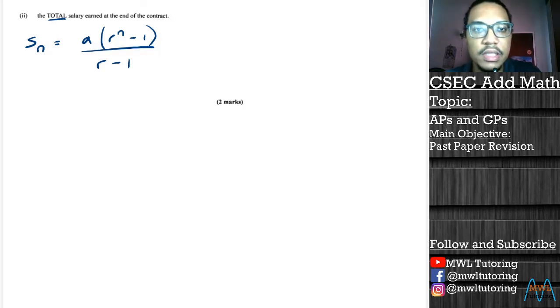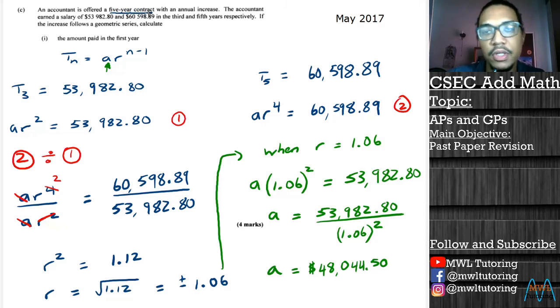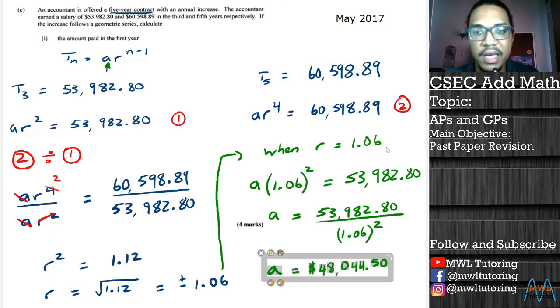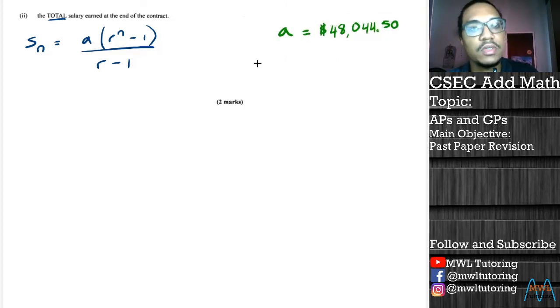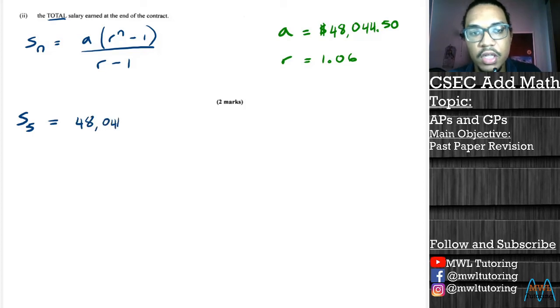We know how long his contract was. It says a five-year contract, so we know n is going to be 5. We just found a as $48,044.50 and we also have r as 1.06. So we're going to just take all that information and substitute it into our question. So sum of 5 equals $48,044.50 multiplied by 1.06 to the power of 5 minus 1, all over 1.06 minus 1.